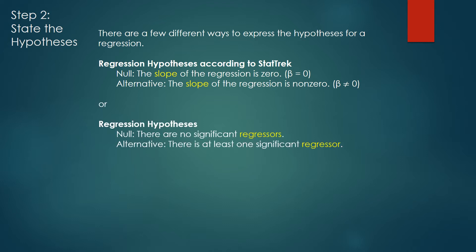If you don't like using that language, you can use something like this. You can say the null hypothesis is there are no significant regressors. Or, alternatively, you can say there is at least one significant regressor. The key thing to remember is both styles say exactly the same thing.